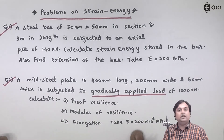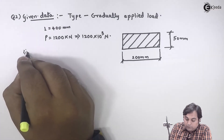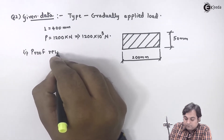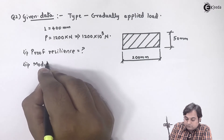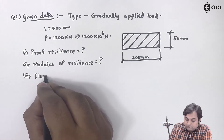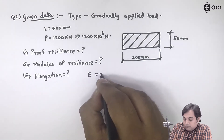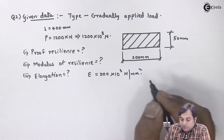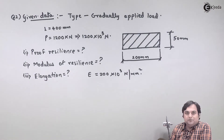We need to calculate: first, proof resilience; second, modulus of resilience; third, elongation. The value of Young's modulus E is given as 200 × 10³ Newton per mm square. This is the question we have in front of us. Now let us try to solve this problem.